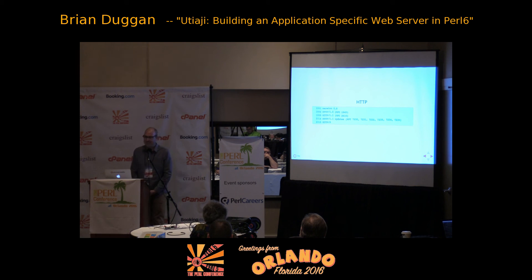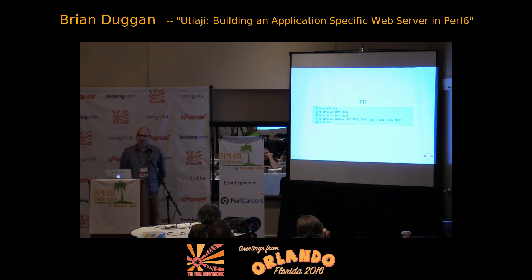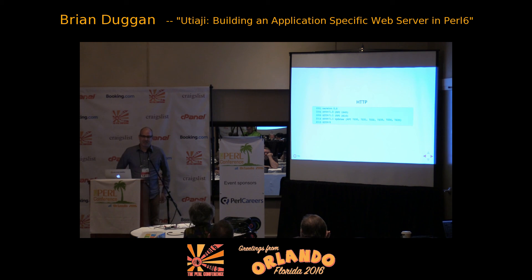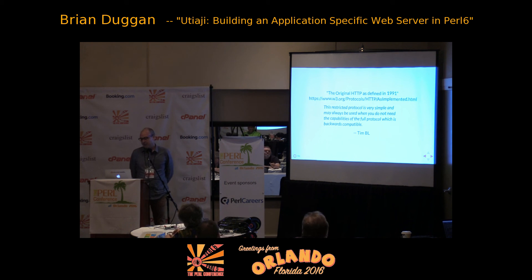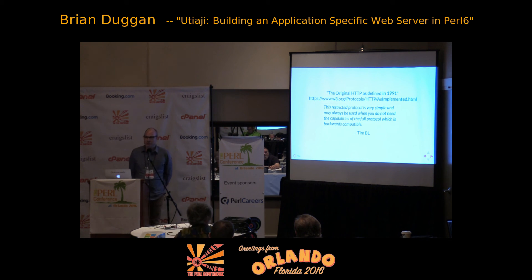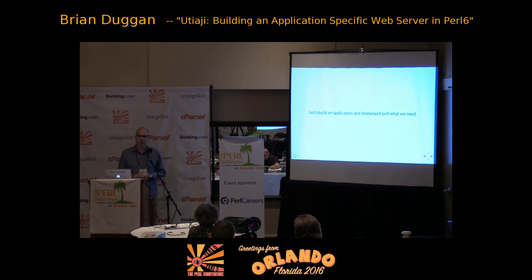When I say HTTP has become complicated: it started out in 1991, we had version 0.9; in 1996 we had 1.0; then RFC 2616 came out in 1999; and then in 2014 there was disambiguation of some ambiguities in RFC 2616, so we have a whole slew of RFCs, and now we have HTTP/2. But not all applications use all of HTTP. Tim Berners-Lee said about HTTP 0.9 that the restricted protocol is very simple and may always be used when you don't need the capabilities of the full protocol. A lot of applications don't need all of the features that web servers or web frameworks offer. This talk is about building an application and implementing the part of HTTP that's needed for the particular application.